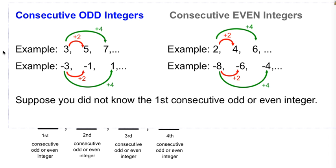Here are two sets of examples. You have the integers 3, 5, and 7. Those are all consecutive odd integers as well as negative 3, negative 1, and positive 1.